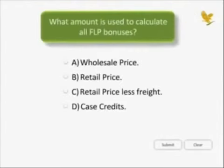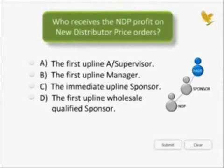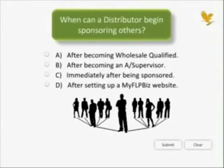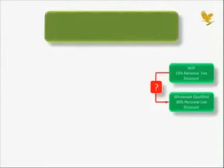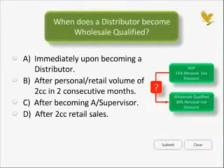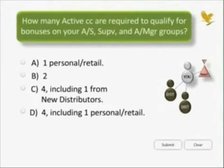To advance to a new level, for what period can a distributor accumulate case credits? What amount is used to calculate all FLP bonuses? Who receives the NDP profit on new distributor price orders? When can a person begin sponsoring others? When does a person become wholesale qualified? How many active case credits are required in order to qualify for bonuses on your Assistant Supervisor, Supervisor, and Assistant Manager groups?